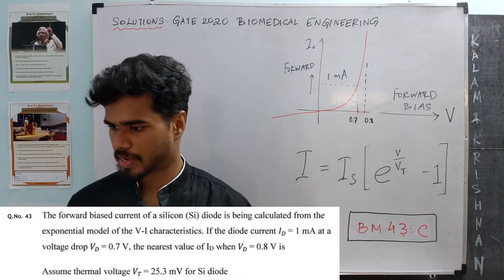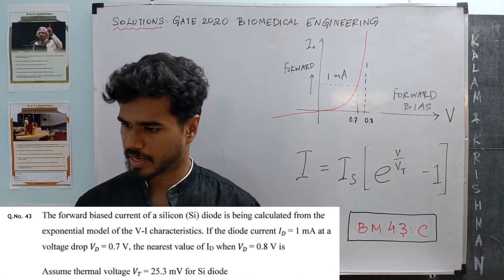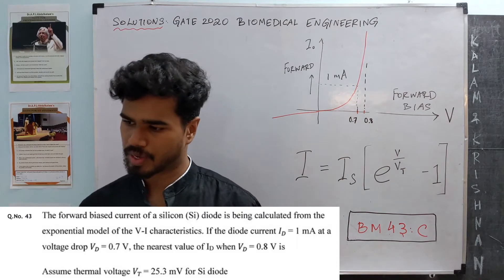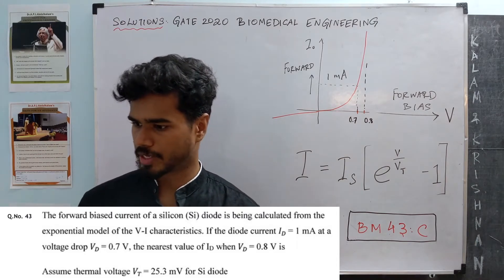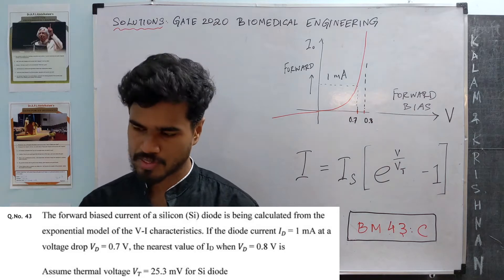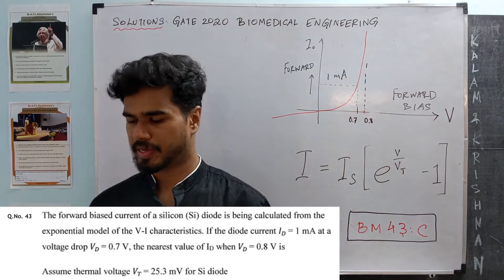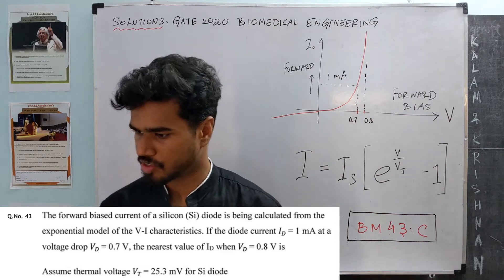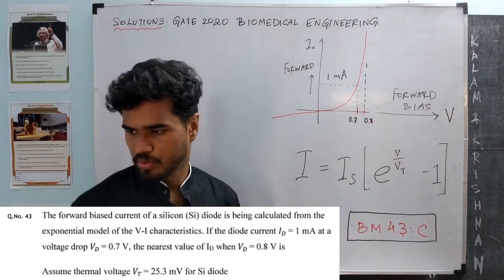43rd question. The forward bias current of a silicon diode is being calculated from the exponential model of the V-I characteristics. The diode current ID is 1 milliamp at a voltage drop VD of 0.7 volts. We need to find the nearest value of ID when VD is 0.8 volts. Assume thermal voltage VT to be 25.3 millivolts for silicon diode.